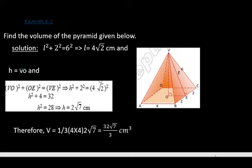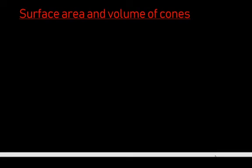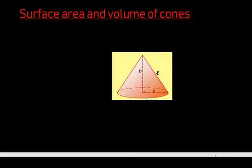Let's proceed to the next topic: surface area and volume of cones. If you remember, we have been using half the product of the perimeter of the base times the slant height to find the lateral surface area of pyramids, and we've been considering the area of the base and the lateral surface area to find the total surface area of pyramids. We're going to do the same thing here for a right circular cone.